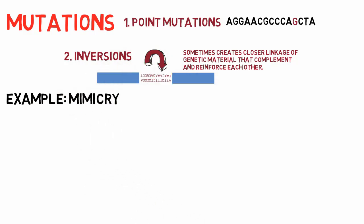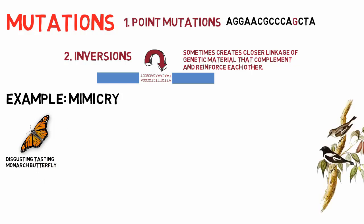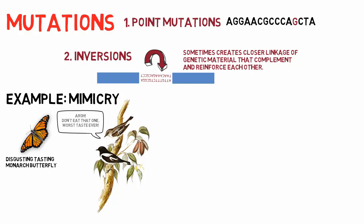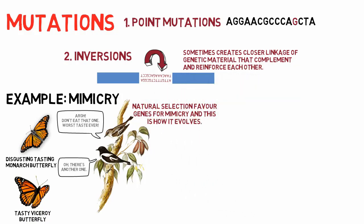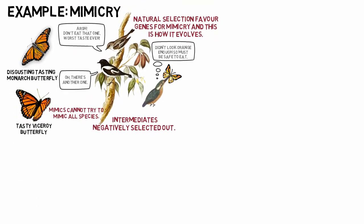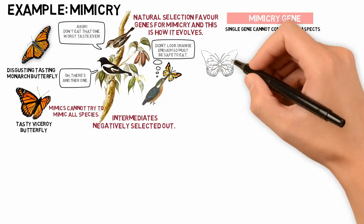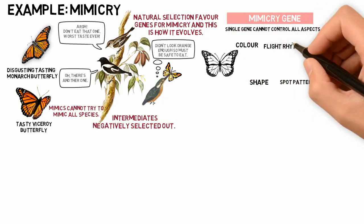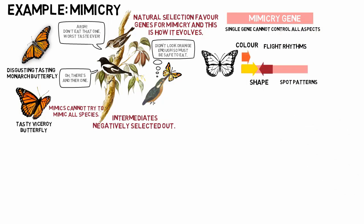Dawkins explains the phenomenon of mimicry, giving the example of disgusting-tasting butterflies that are brightly and distinctively colored as warning marks for birds. Other butterflies may mimic them by displaying the same colored markings to fool birds into not eating them. Natural selection favors genes for mimicry. However, mimics cannot try to mimic all species — they must commit to one. Any intermediates would be eaten and negatively selected out. Dawkins argues that one gene probably cannot control all aspects of mimicry — color, shape, spot patterns, flight rhythms — but through inversions and rearrangements, a large complex of formerly separate genes comes together in tight linkage and behaves like a single gene. These clusters are rarely split up by crossing over, so intermediate butterflies are never seen in nature.